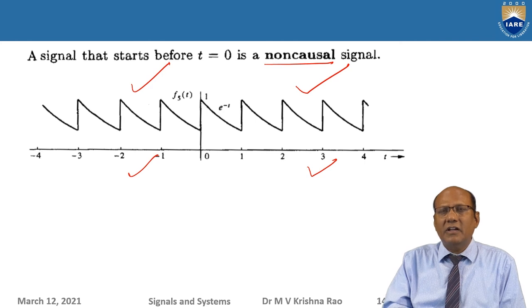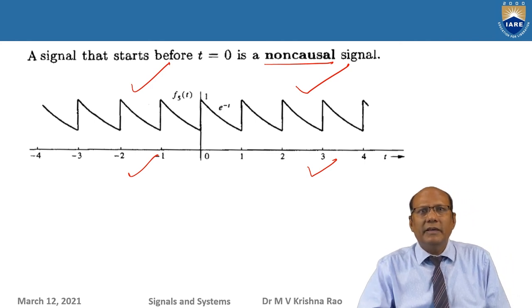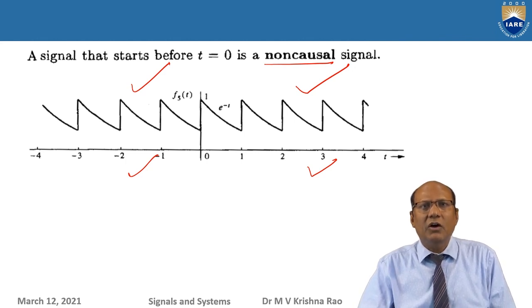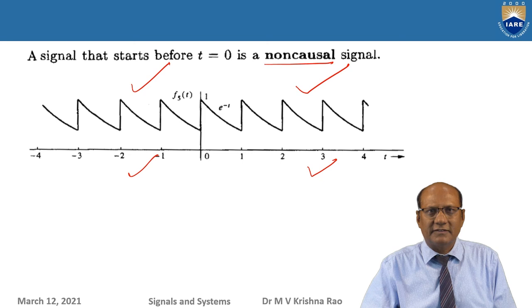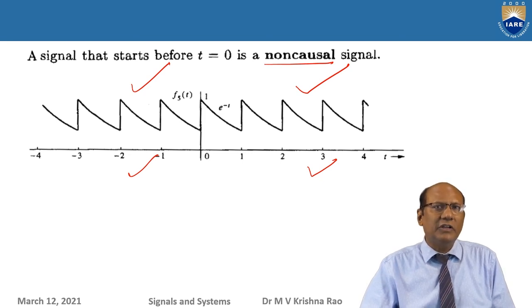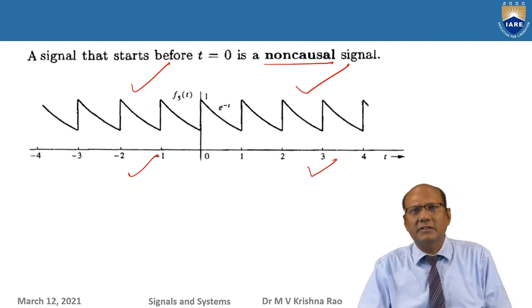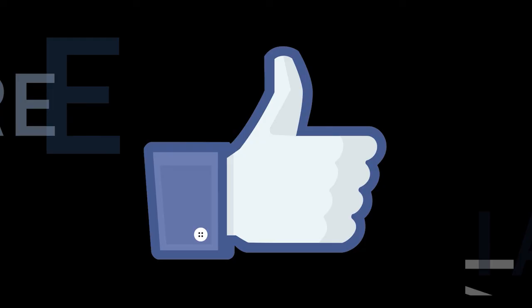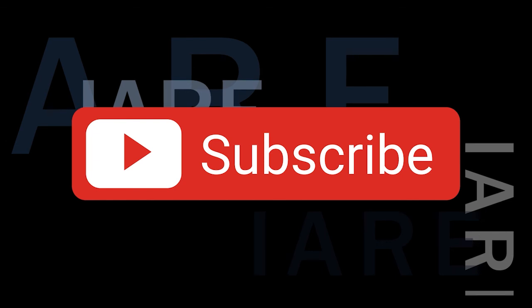In the next class, we are going to apply operations — how to manipulate signals on the horizontal axis and on the vertical axis. Horizontal axis means time; vertical axis means voltage or current. We can manipulate one of these — for example, you want to amplify the signal. We will do that in the next class. Thank you very much. Like, share and subscribe. Hit the bell icon for more updates.